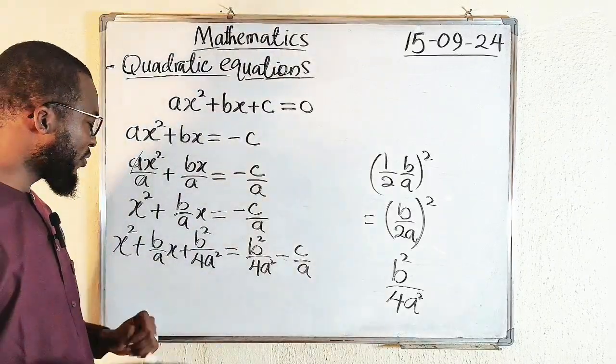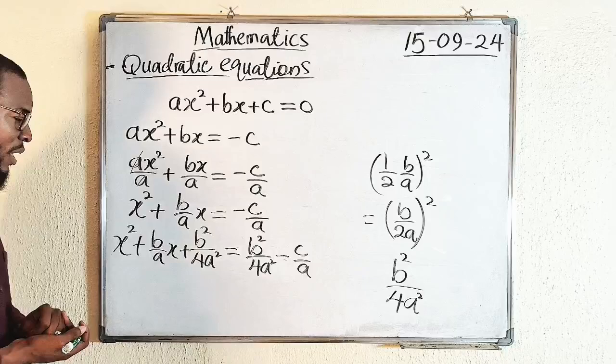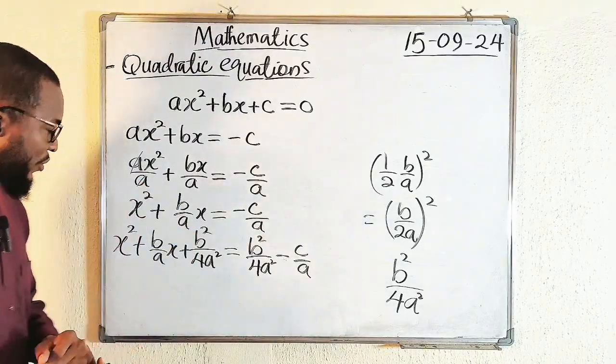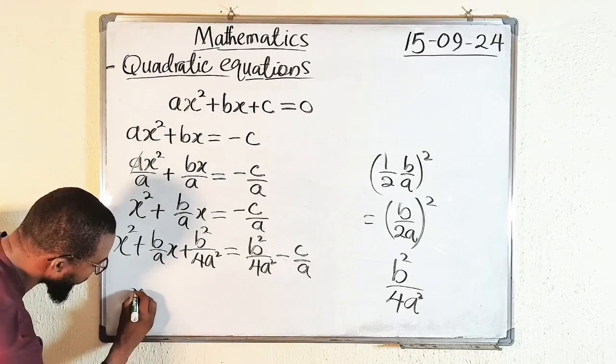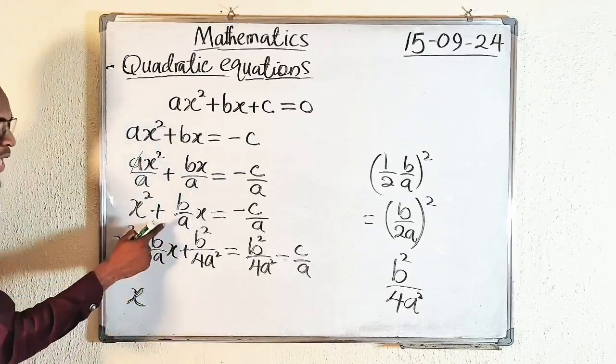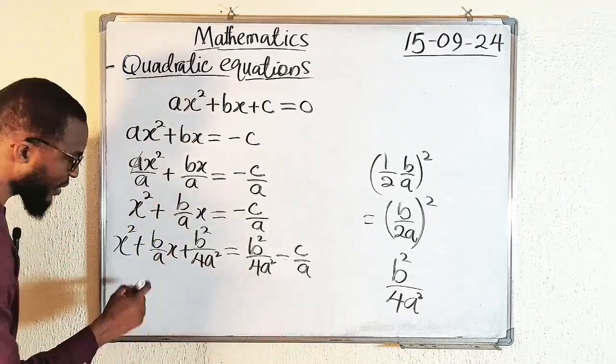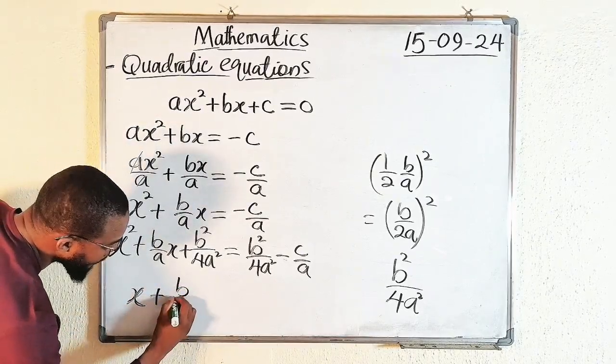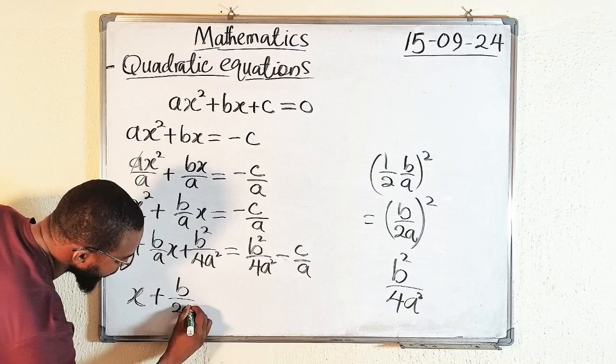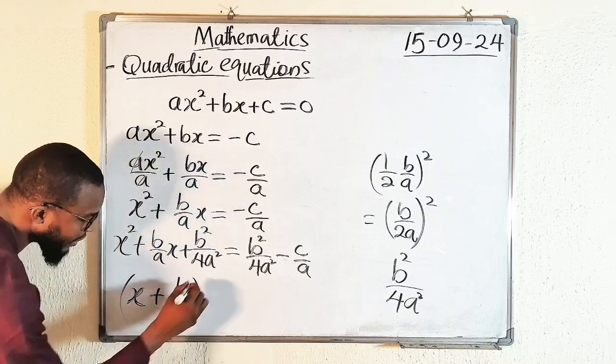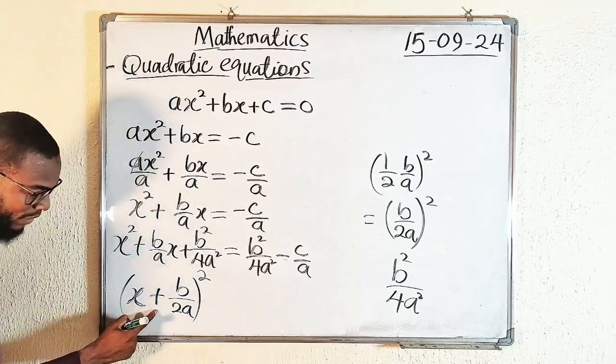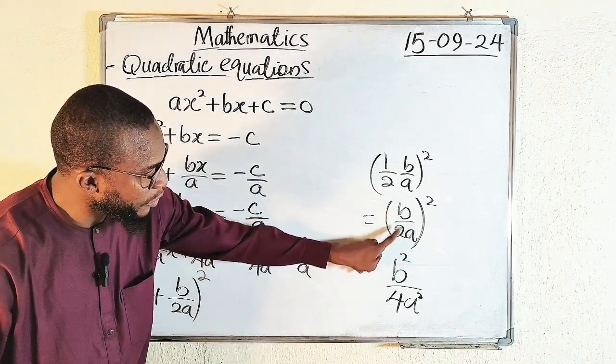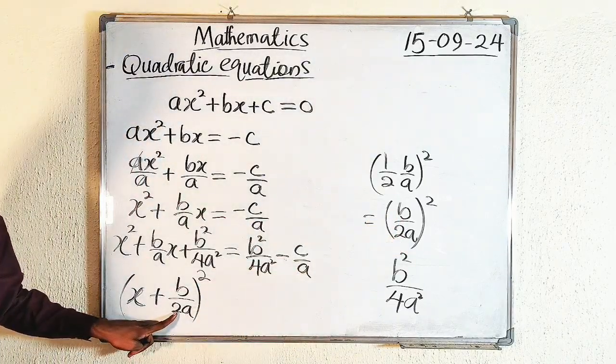Now the left-hand side is a perfect square quadratic expression. How do we factorize it? You take a single x without power, then half of the coefficient of x. Half of this will be b/2a, then you square everything: (x + b/2a)². If you expand this, you have to get this back. Remember, this is half of the coefficient of x, b/2a.